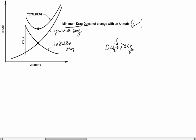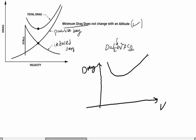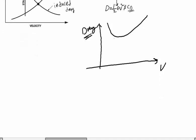Let me draw the drag curve again. On the x-axis we have velocity, and on the y-axis drag force. It is roughly a parabolic, second-order equation because it is a function of v². It has one global minimum. To solve this optimization problem, we differentiate the drag equation with respect to v, equate it to zero, and find v at minimum drag, then substitute back to find minimum drag.